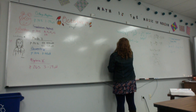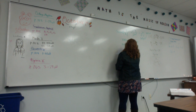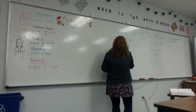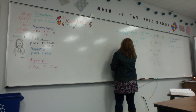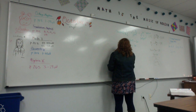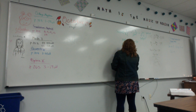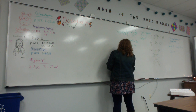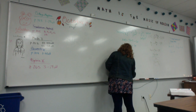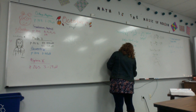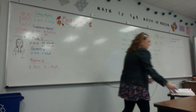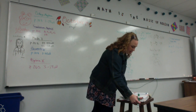Now I need to use the distributive property so that I can get 3x minus 6 minus 6x. I'm going to combine my terms: x plus 2 equals negative 3x minus 6. I'm going to subtract 2 from both sides, add 3x to both sides, divide by 4, and x equals negative 2.